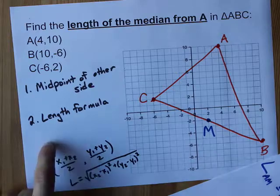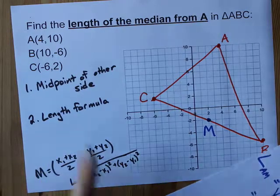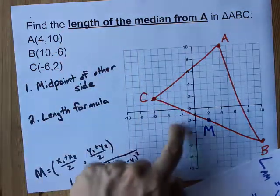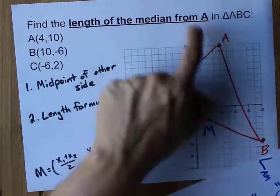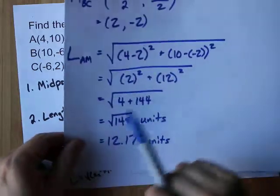Call it M. Midpoint formula is easy. Length of the median is the length from that midpoint to the corner you were asked about, A to M here.